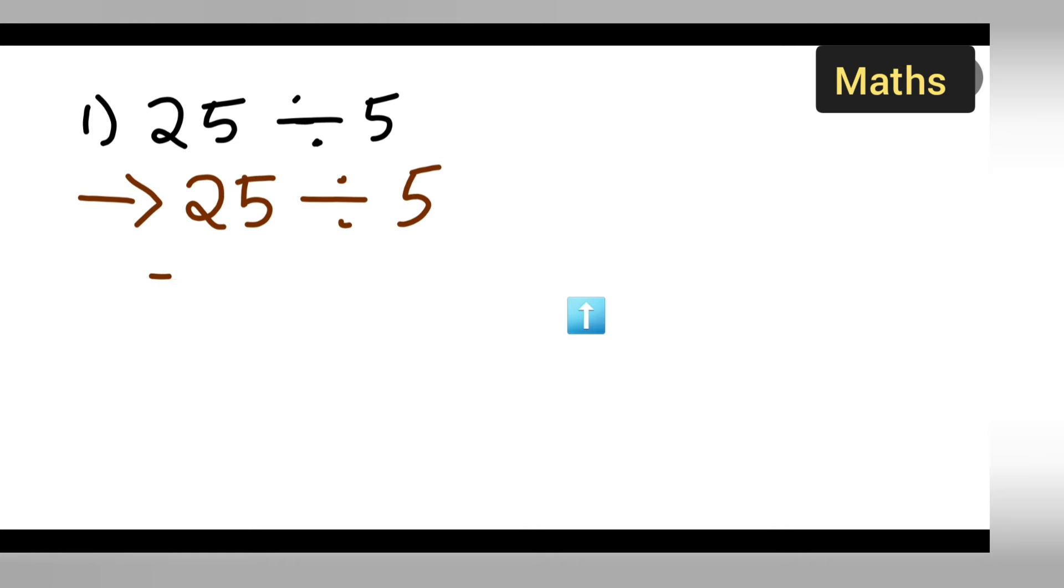Then what you can do is write down 25, multiply this with the reciprocal of this 5. That is 1 by 5.